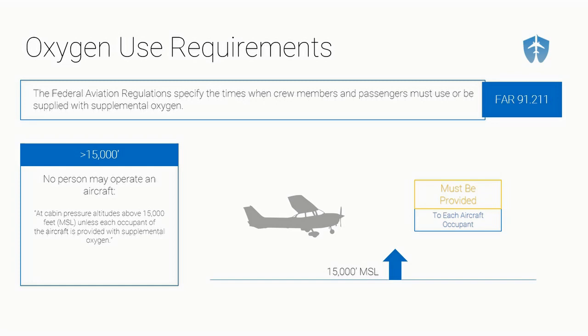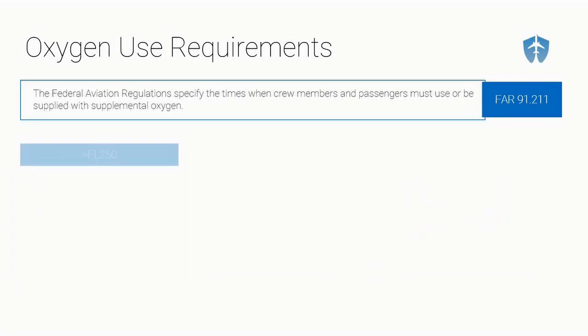Those are the three altitude zones you need to know as you go through flight training: 12,500 to 14,000 feet, above 14,000 feet, and above 15,000 feet. The next rules I'm going to cover are more advanced — more relevant to Part 135 and Part 121 operations and pressurized aircraft. During flight training you're probably not flying pressurized aircraft, so these next rules won't really apply until you're further along in your aviation career, but we'll cover them here anyway.